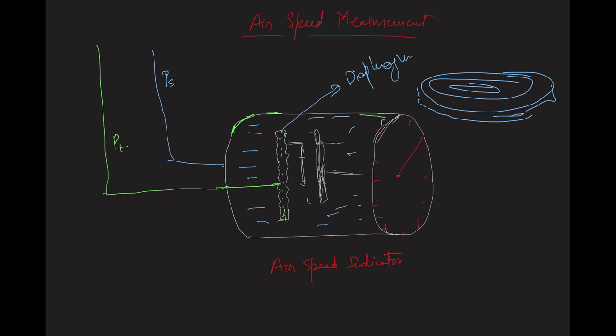The static pressure line enters the casing and fills the area around the diaphragm — indicated by the blue region. So all this blue area indicates the static pressure. Inside the casing we have static pressure, and inside the diaphragm we have total pressure. The diaphragm therefore experiences total pressure from inside and static pressure from outside.